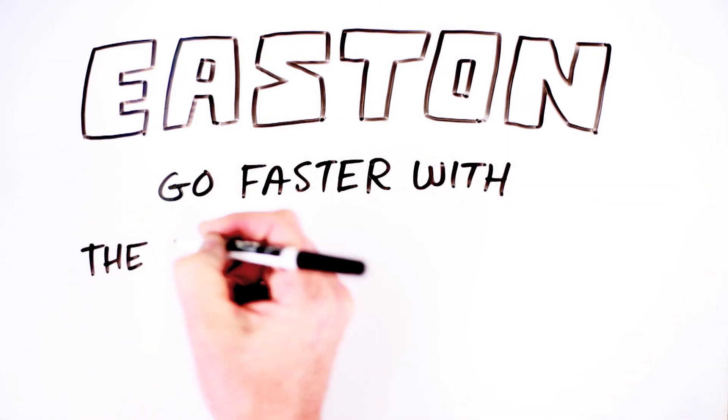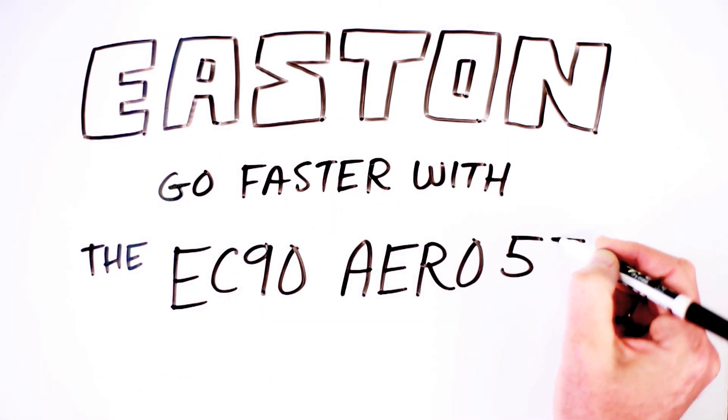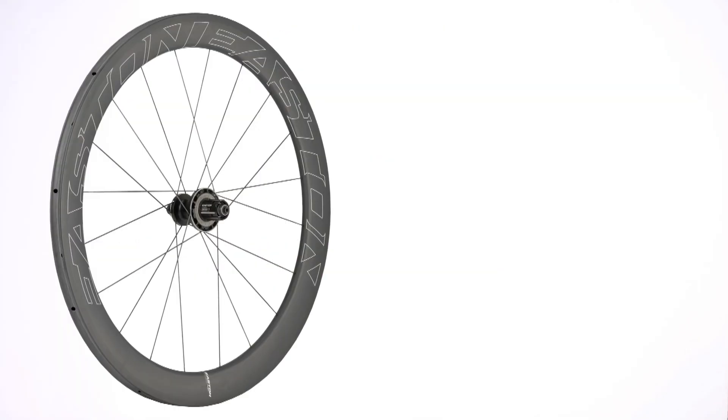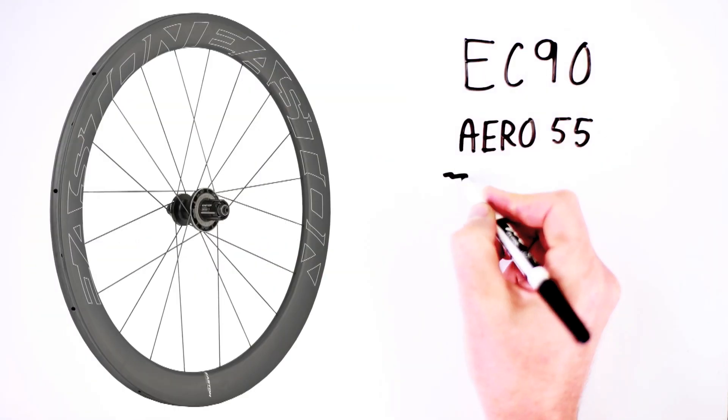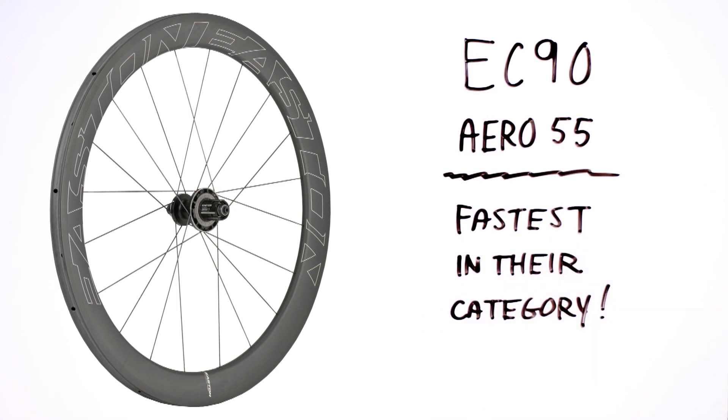Go faster with Easton's EC90 Aero 55. Easton's new EC90 Aero 55 wheels are the fastest in their category. Should that matter to you? We believe it should.